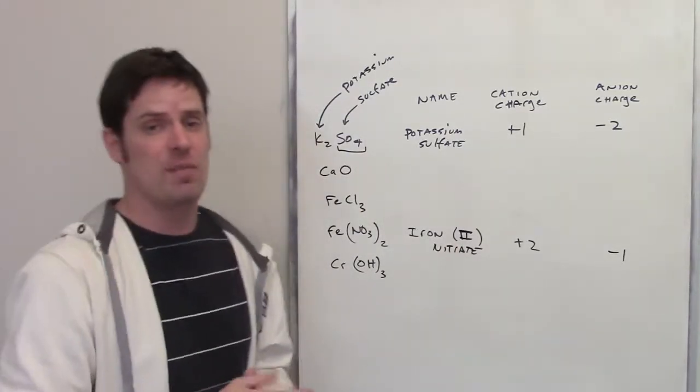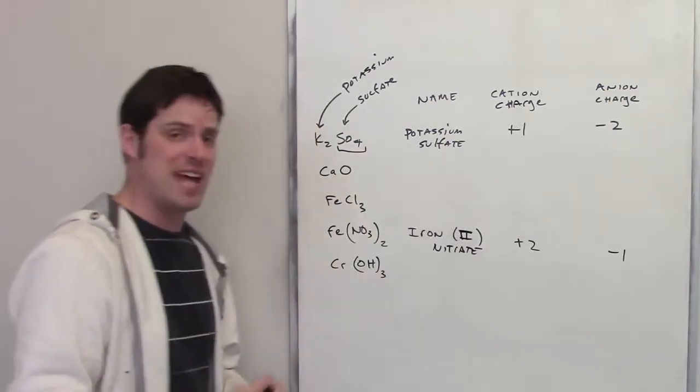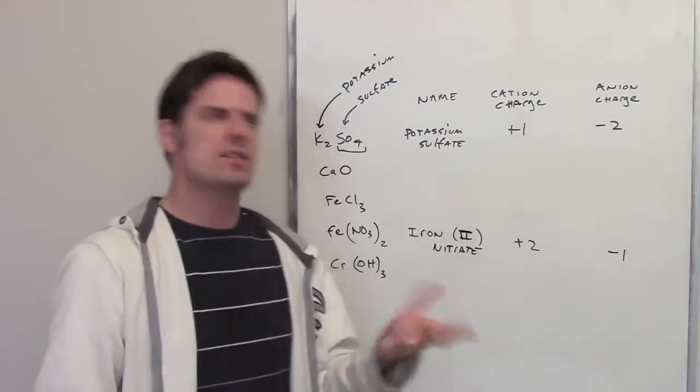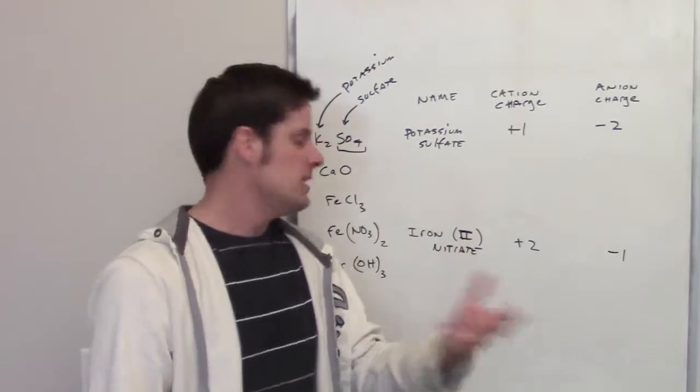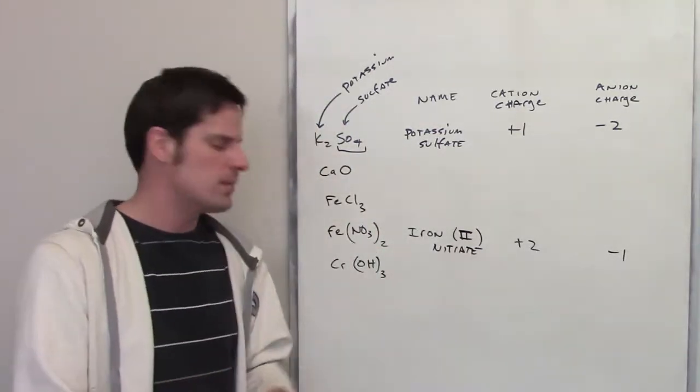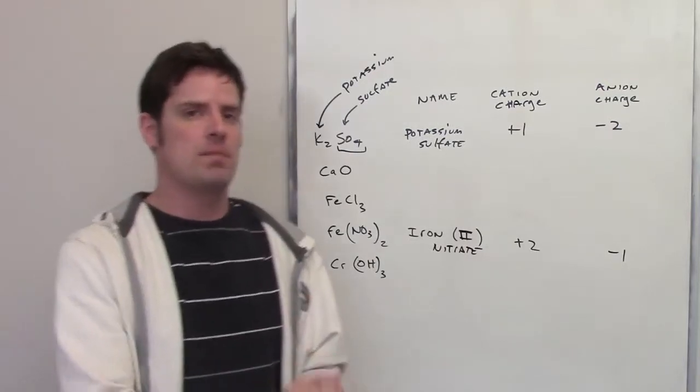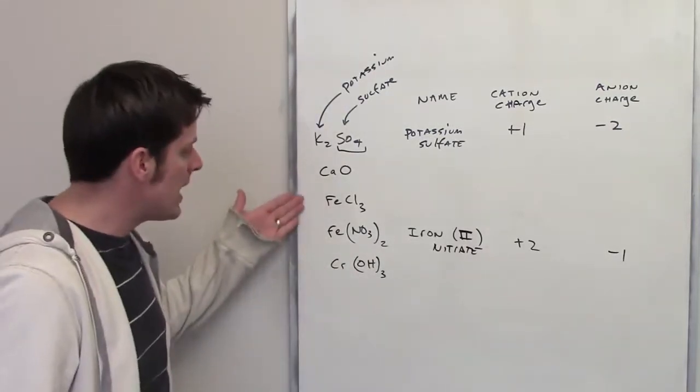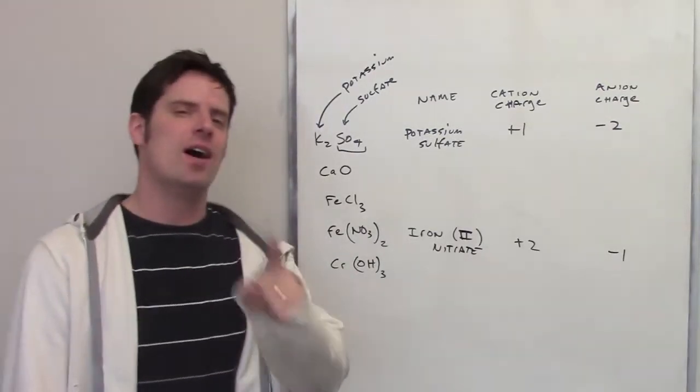Now that distinguishes it from iron 3 nitrate, for example, because that can totally exist as well. At least, potentially, you could have iron 3 nitrate, which you'd have three nitrates bound to that iron, because iron, once again, is one of those elements that is not in column one or two of the periodic table. Okay, I'll let you go ahead and tackle the rest of these on your own.